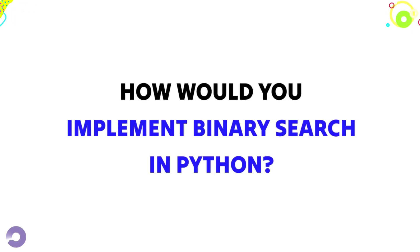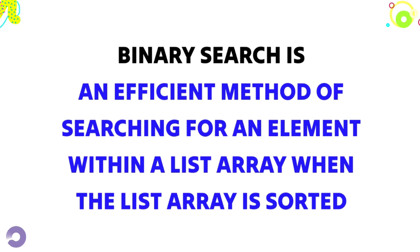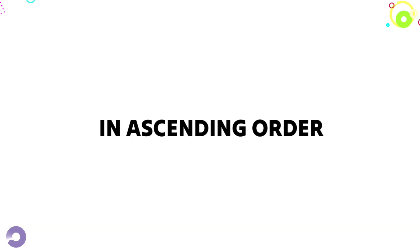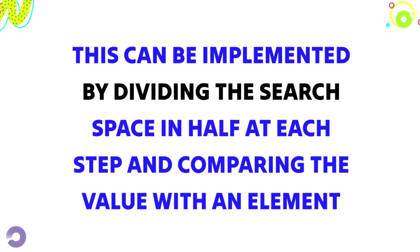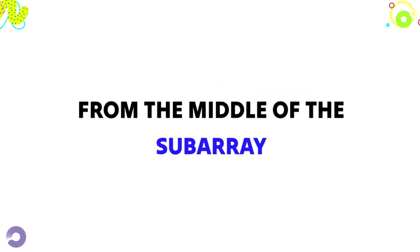Question 3: How would you implement binary search in Python? Answer: Binary search is an efficient method of searching for an element within a list or array when the list or array is sorted in ascending order. This can be implemented by dividing the search space in half at each step and comparing the value with an element from the middle of the subarray.